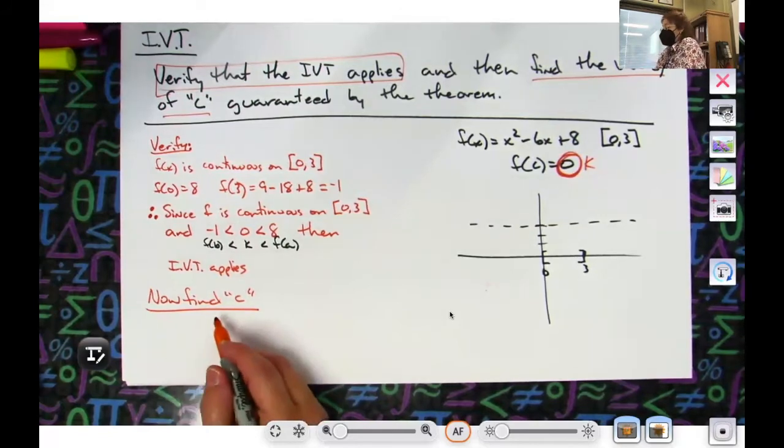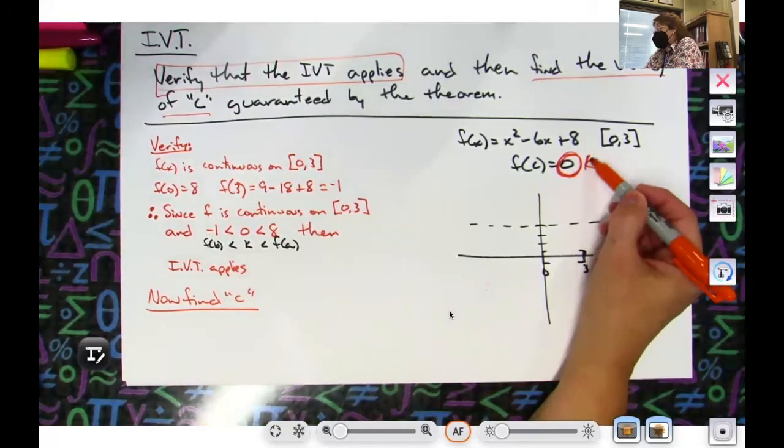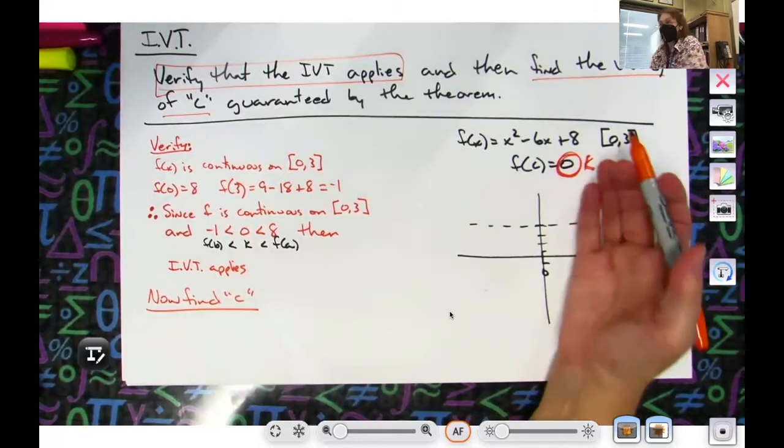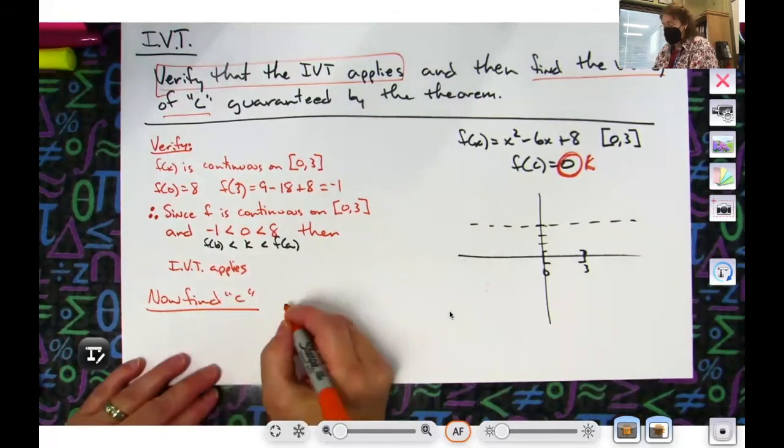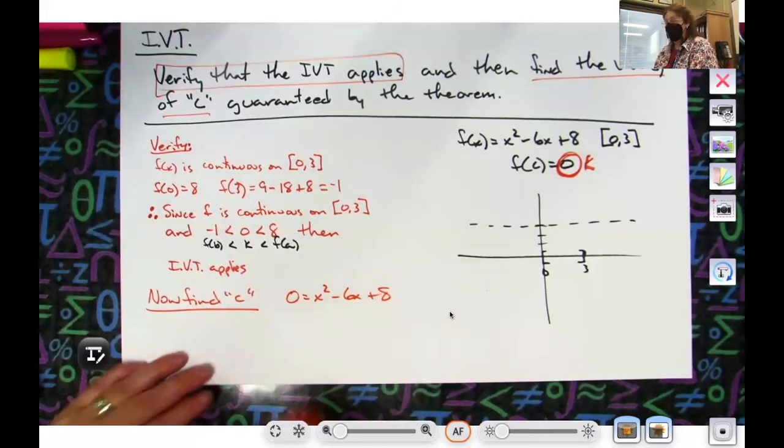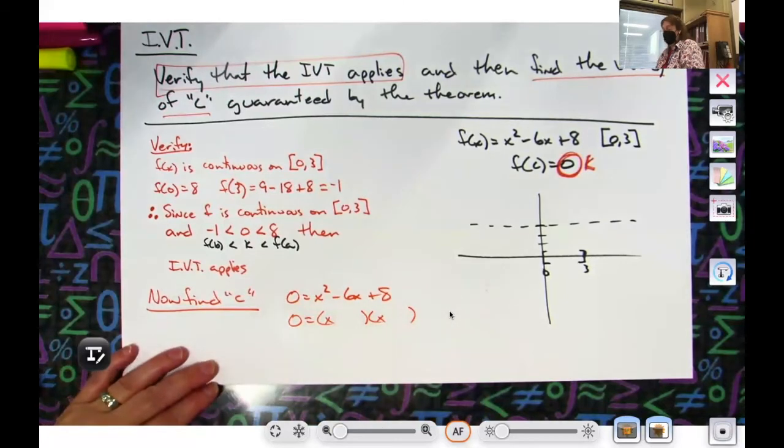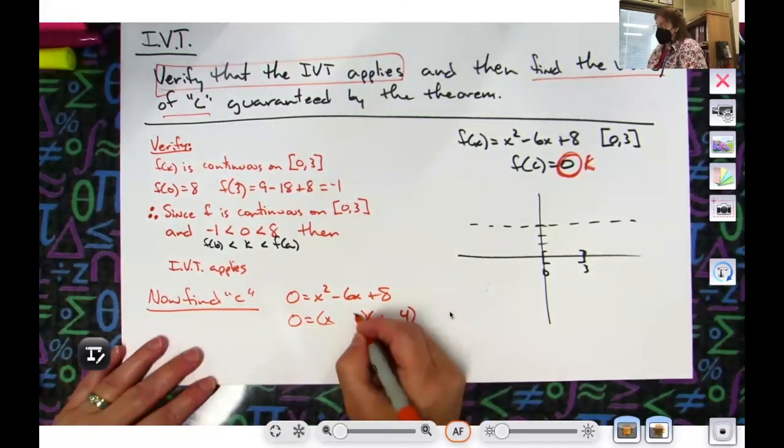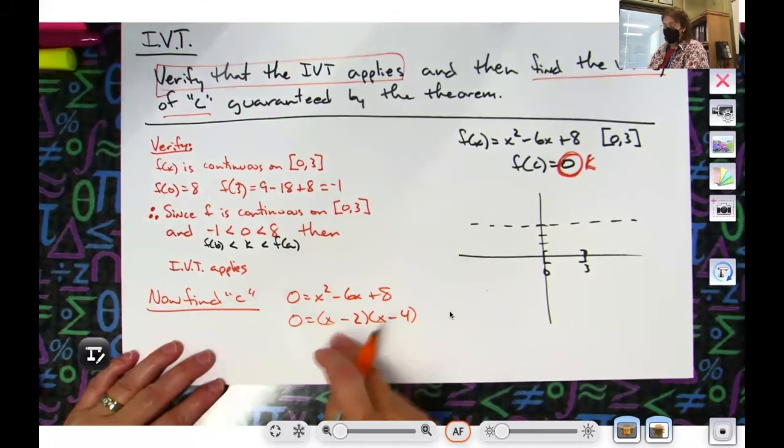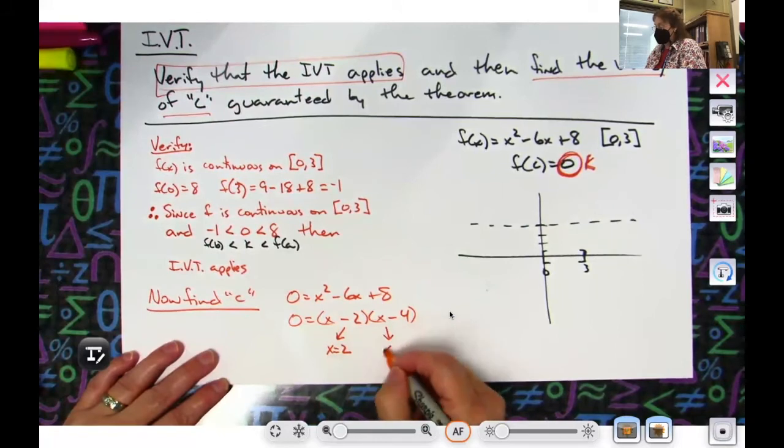So that when they are grading your paper, they can find things really easy. Okay, now how do I find C? I take the function, I set it equal to zero—or k. So if that was some other number, I would set it equal to that number. It's just by coincidence, so don't always set it equal to zero; pay attention to what the problem asks for. So zero equals x squared minus 6x plus 8. We can solve this hopefully by factoring—so x and x, let's see four, two, and they both need to be negative. That gives me negative six.